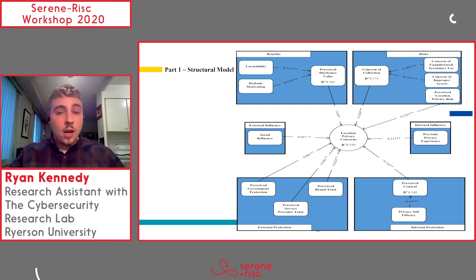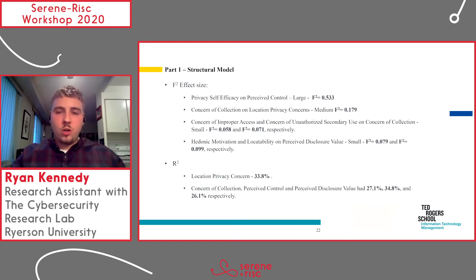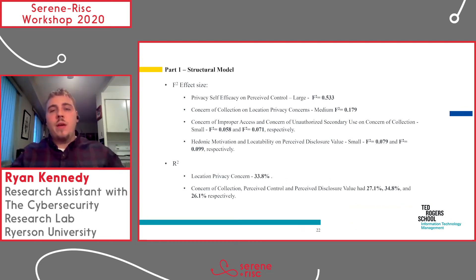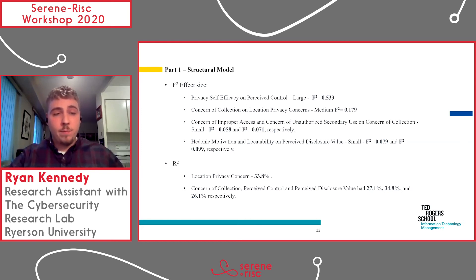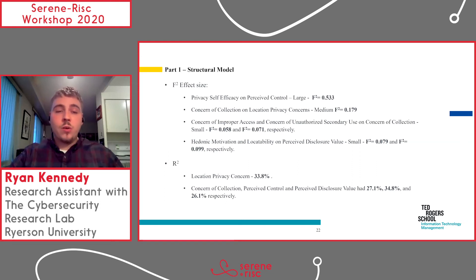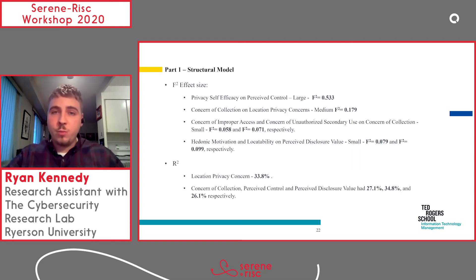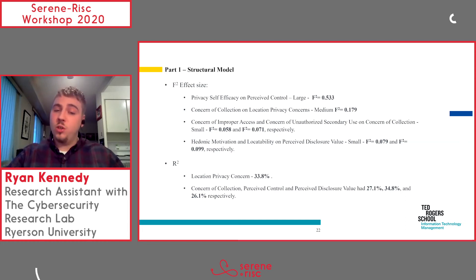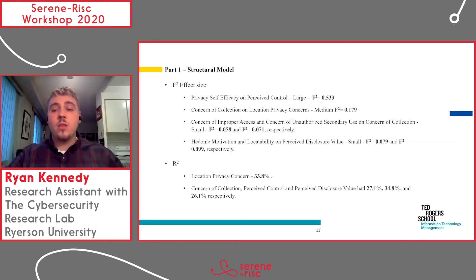In terms of effect sizes, privacy self-efficacy on perceived control was large; concern of collection on location privacy concerns was medium; and the remaining were small. For R-squared, our core variable of location privacy concerns had just under 34% of total variance explained. Concern of collection, perceived control, and perceived disclosure value had 27.1%, 34.8%, and 26.1% respectively.